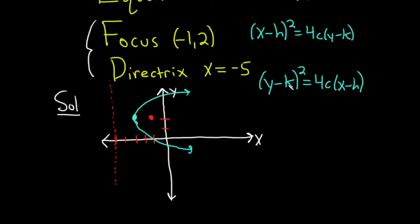Okay, so now all we have to do is plug stuff in. The vertex here, let's write it down as an ordered pair. It's negative 3 comma 2. So this is the h and this is the k.